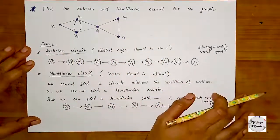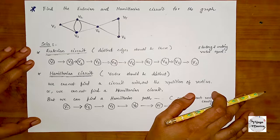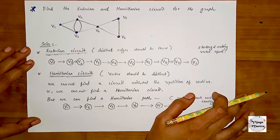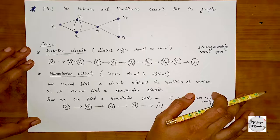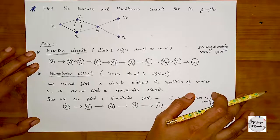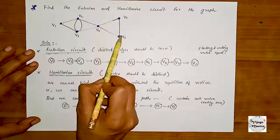Now let's compare an Eulerian circuit versus a Hamiltonian circuit. For an Eulerian circuit, we should traverse all the edges. We can repeat vertices but not edges. The graph has vertices v1, v2, v3, v4, v5, v6.